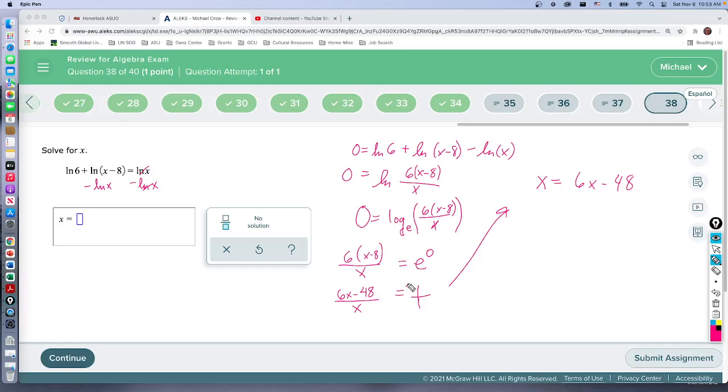This gives us negative 5x equals negative 48. Divide both sides by negative 5, and that gives us x equals positive 48/5, so it's about nine point something.